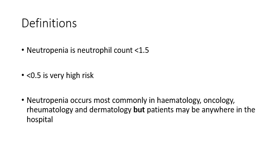Neutropenia mainly occurs in haematology, oncology, rheumatology and dermatology, but you can get neutropenic patients with most specialities. More importantly, these patients may be anywhere in the hospital. Our patient populations have multiple comorbidities these days, so they're not going to be restricted to particular wards most of the time.